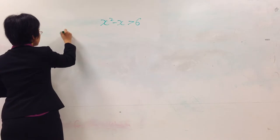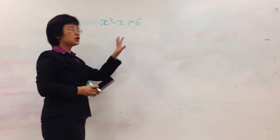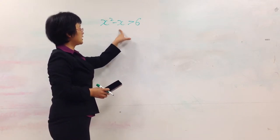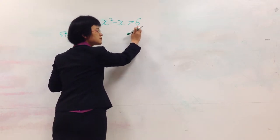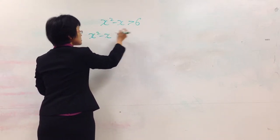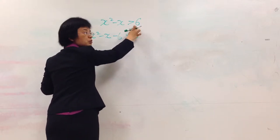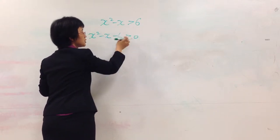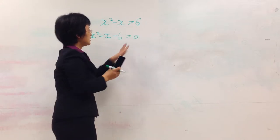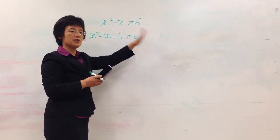Step 1: we're going to move all terms from one side to another side. Look at this inequality — we're going to move 6 from right to left: x squared minus x minus 6 greater than 0. When we move 6 from right to left, we change the sign, so from positive 6 to negative 6. This way, 0 is the only term on the right side.